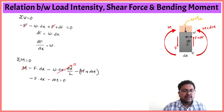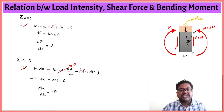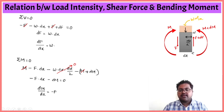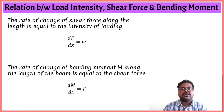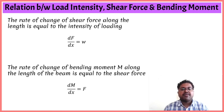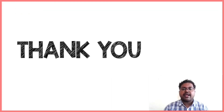This gives dM by dx equal to minus F. So the rate of change of bending moment along the length gives the shear force. To summarize: the rate of change of shear force along the length equals the intensity of loading, and the rate of change of bending moment along the length of the beam equals the shear force. This is the relationship between load intensity, shear force, and bending moment.